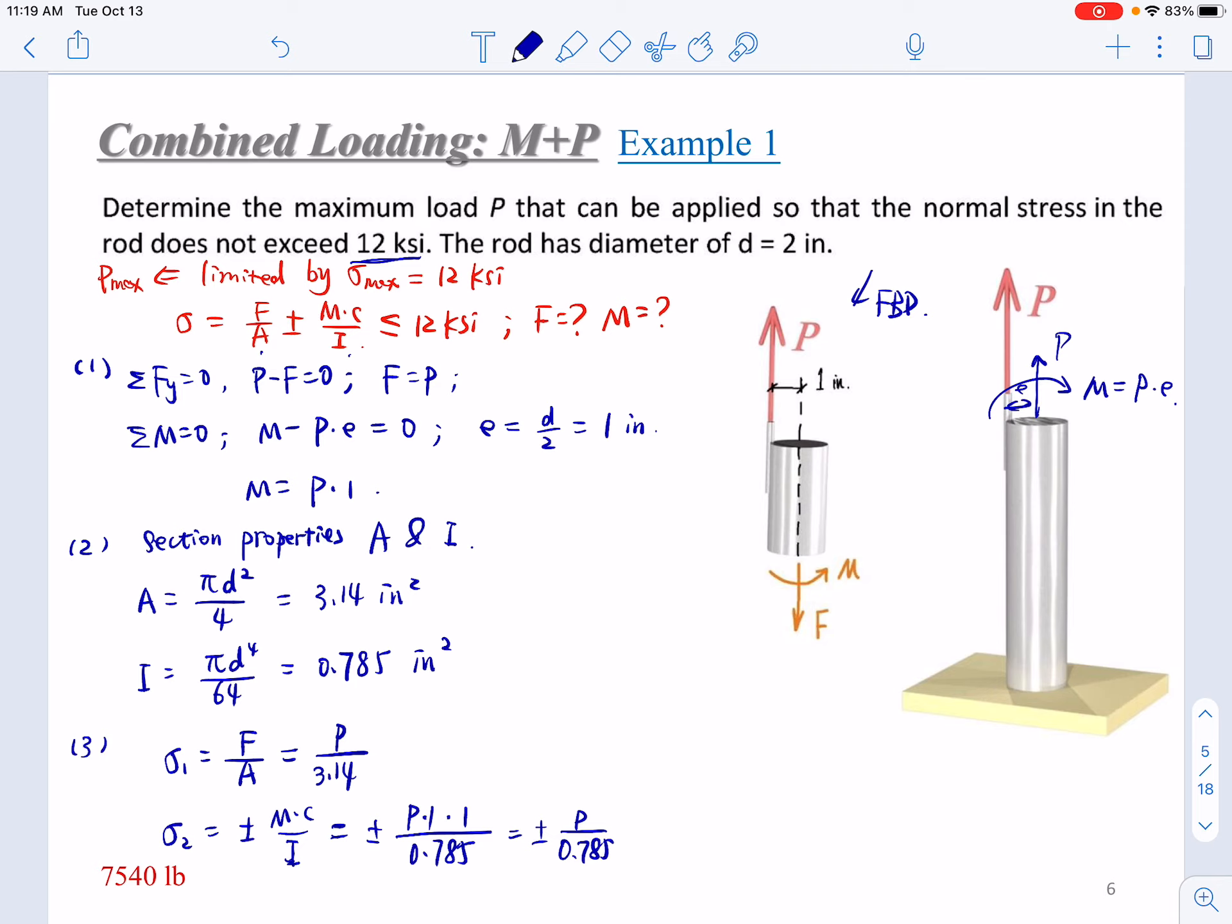Now we can examine the distributions of these two normal stresses. In the first case, sigma 1 is a constant through the cross-section. So if we examine the cross-section, the distribution of sigma 1 will be a constant in tension. Then how about sigma 2? Look at the direction of the M. So on the left end, it will be in tension.